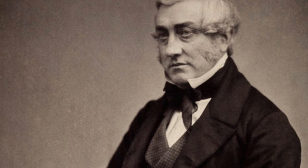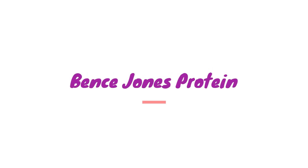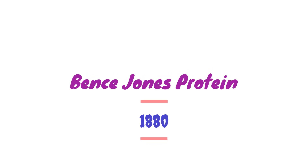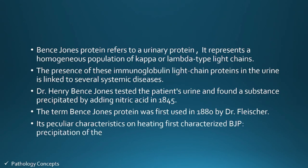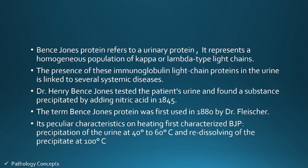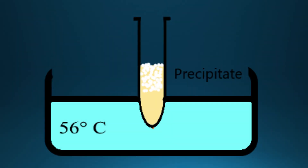Dr. Henry Bence Jones tested a patient's urine and found a substance that precipitated by adding nitric acid, in 1845. The term Bence Jones protein was first used in 1880 by Dr. Fleischer. Its peculiar characteristic on heating first characterized Bence Jones protein is precipitation of the urine at 40 to 60 degrees centigrade.